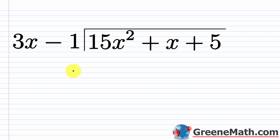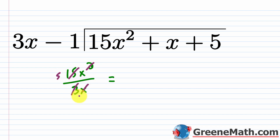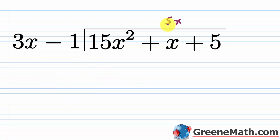We would start by saying: what is 15x squared over 3x? Well, 15 divided by 3 is 5, and x squared over x is just x, so this becomes 5x. Then we're going to multiply: 5x times 3x — 5 times 3 is 15, x times x is x squared — and then 5x times negative 1 is minus 5x.